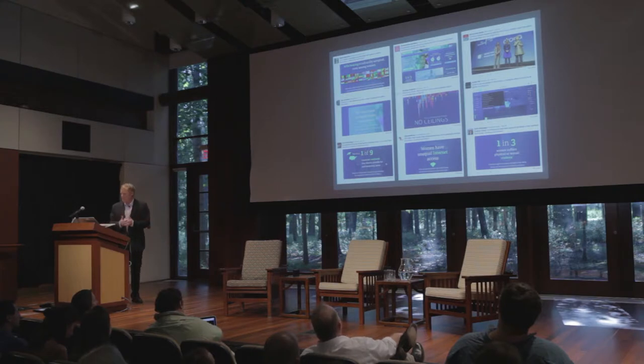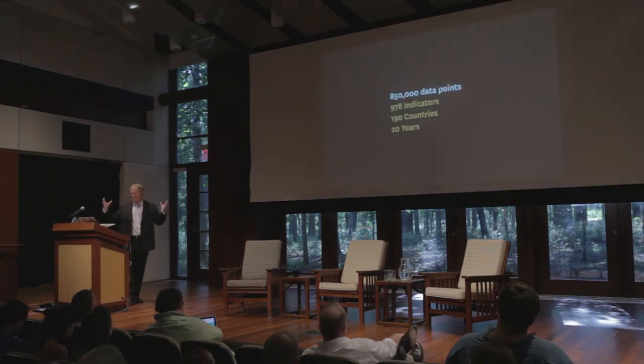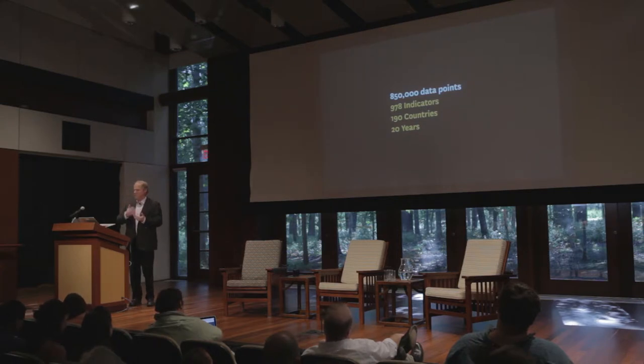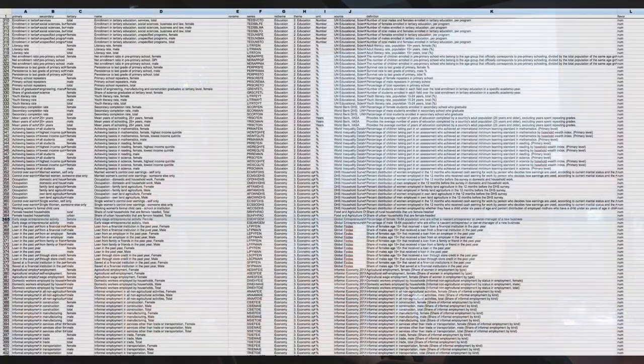At the end of the day, 850,000 data points went into this — across 978 different indicators, about 190 countries, and 20 years. Just an astonishing amount of information. But how do we craft that for different kinds of audiences? Here's where we started: a spreadsheet of about a quarter million rows, and they said find some stories. So we did. The data is broken down by particular themes — indicators like reading tests at specific levels — and then each of the countries.